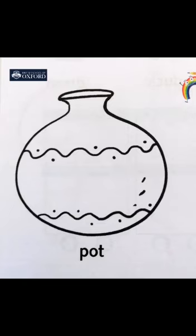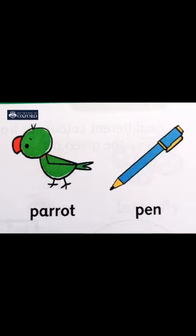Read it with me: P is for pot. Look at the pot and read some more vocabulary words with me.